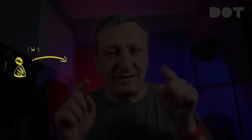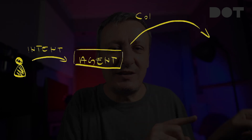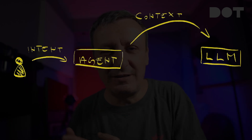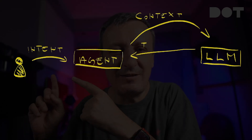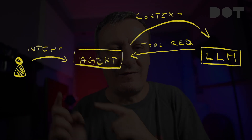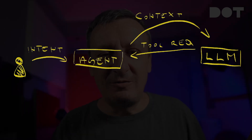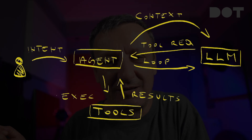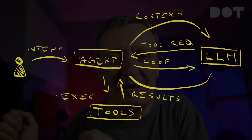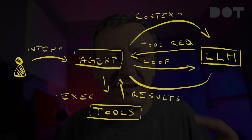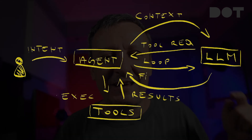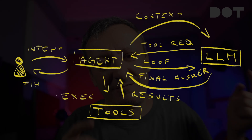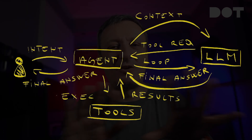Here's the complete flow: you send intent to the agent. The agent sends context to the LLM — that's the system prompt, your intent, and tool descriptions. The LLM can either request tools or provide the final answer. If it requests tools, the agent executes them, gets results, and loops back sending updated context to the LLM. This repeats until the LLM has enough information and sends the final answer back to the agent, which sends it to you.